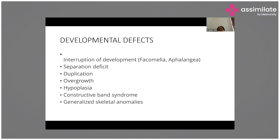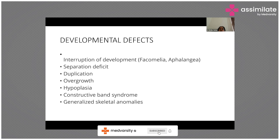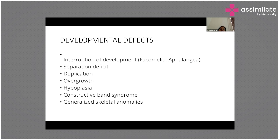Coming to developmental defects - we have already discussed congenital defects. Developmental defects usually happen due to interruption of development. In this interruption, there can be a separation deficit, a duplication, an overgrowth, hypoplasia, a constriction band syndrome where a band is formed, or there can be generalized skeletal anomalies.